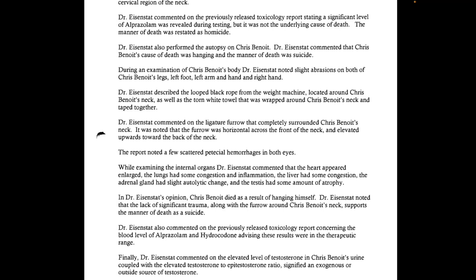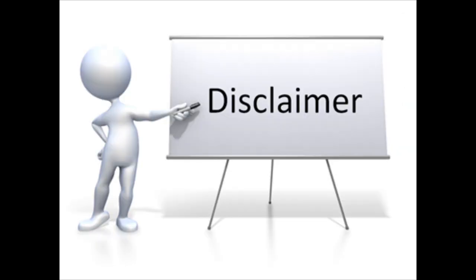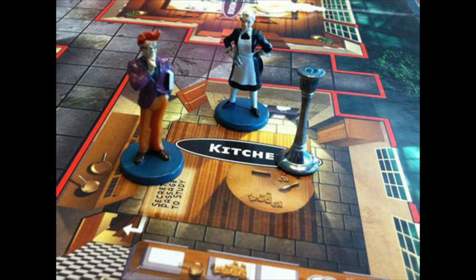This is where the corruption at the Georgia Bureau of Investigations Crime Lab comes into consideration, because we have conflicting reports. Details get muddy the higher up we go on the ladder of authority. The most powerful and influential people — in this case the people at the GBI — seem to be the ones fogging up the windows, so to speak. Don't forget the blood they found on Benoit disappeared somewhere during transport from the home to the crime lab.